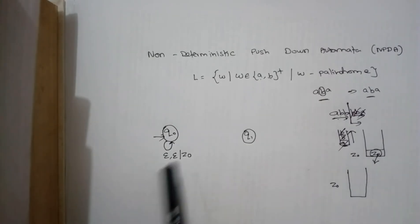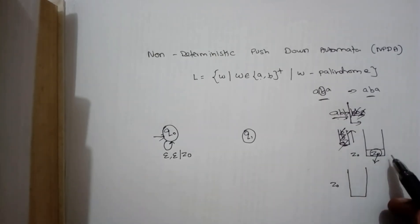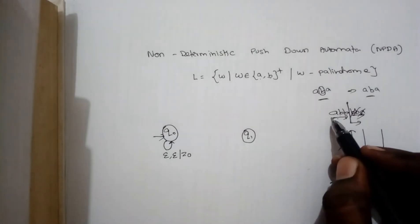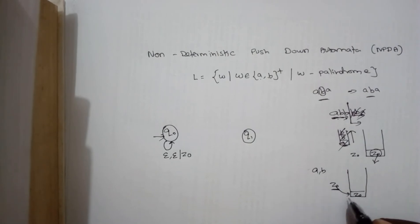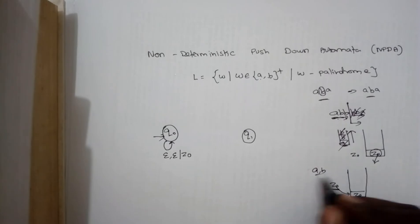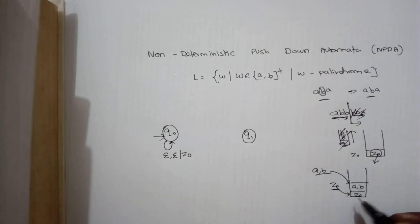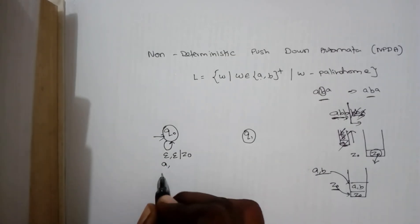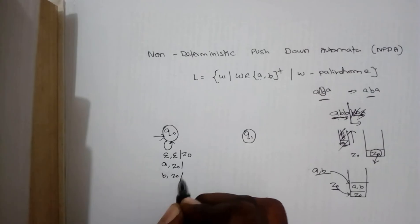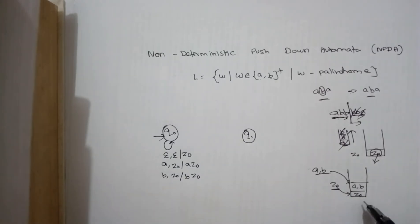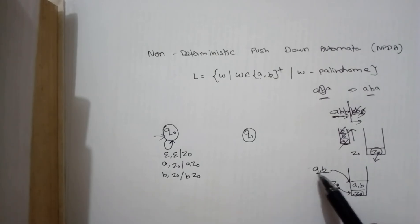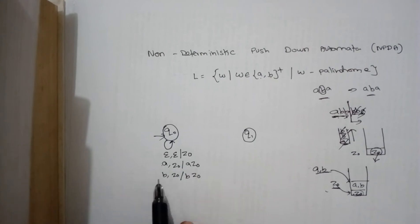If there is no element in the stack you can use epsilon. When we have Z0, it will be popped and the input element — either A or B — must be processed. Till the middle element we push everything into the stack, so we push Z0 back along with the input element. When input is A, push AZ0 into the stack; when input is B, push BZ0 into the stack.